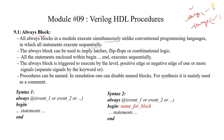The always block can be used to imply latches, flip-flops, or combinational logic. To infer latches, flip-flops, or combinational logic, we can use the always procedural block. The inference of latches, flip-flops, or combinational logic in RTL using the always procedural block depends on the coding style in which we are coding our RTL always procedural block.